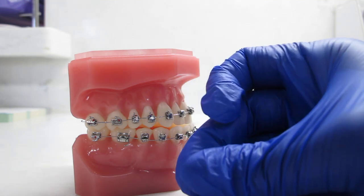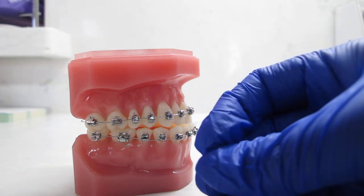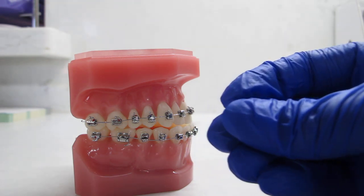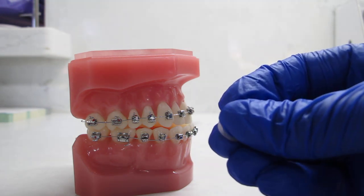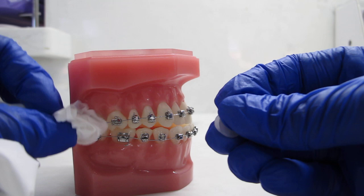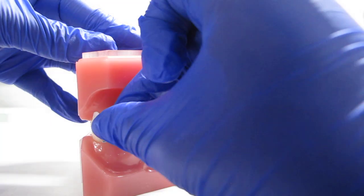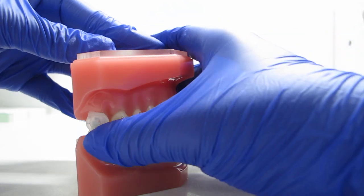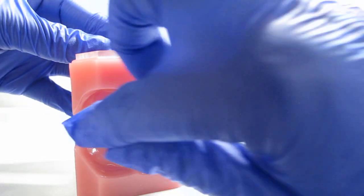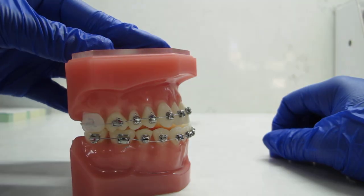The trick to this is making sure that you dry the area off first, or else the wax will not stick. So dry off the area, place it on whatever is bothering you, whether it's a wire or a bracket, and it acts as a cushion.